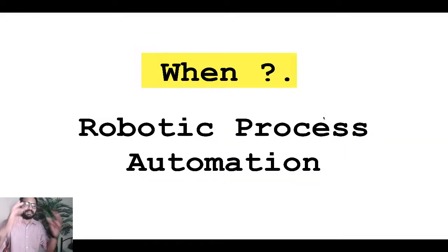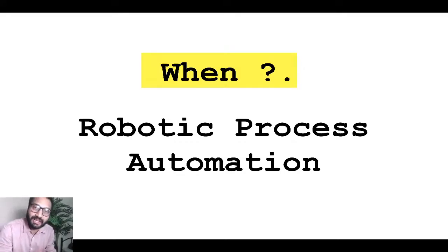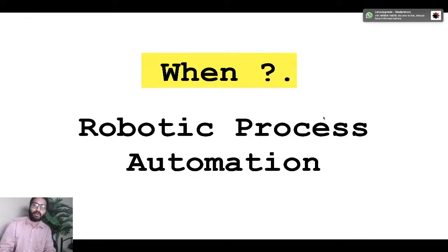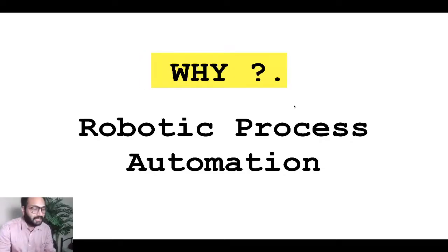When robotic process automation started, it was being developed from the 1990s till 2000. But around the year 2000, it actually evolved and emerged significantly, and people started using robotic process automation much more widely in their day-to-day lives in the 2000s.